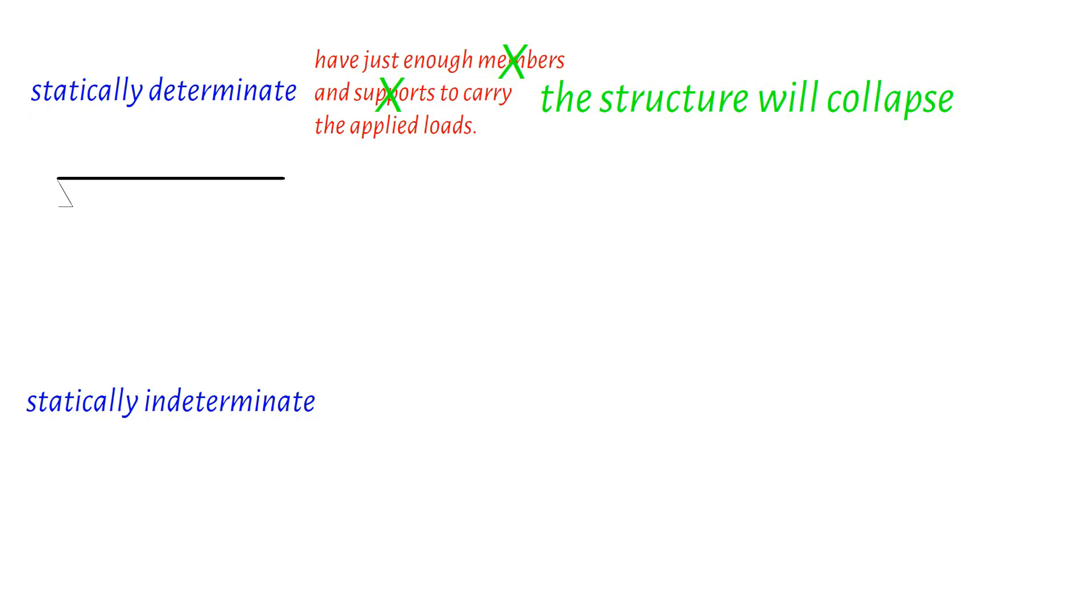Examples of such structures include the simply supported beam and the cantilever beam, which require a minimum of three reaction forces from their supports to remain stable. By employing the equations of equilibrium, such as the sum of horizontal forces, the sum of vertical forces, and the sum of moments, we can analyze statically determinate structures.